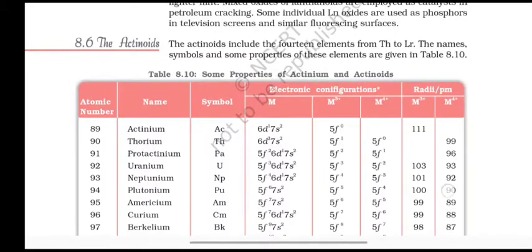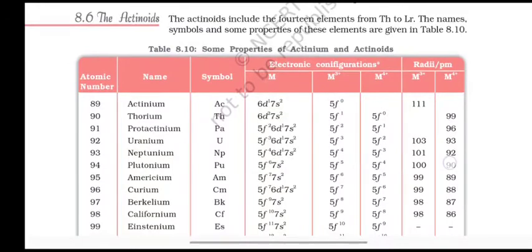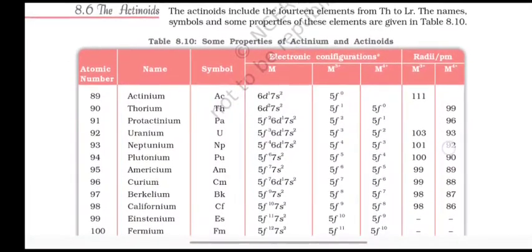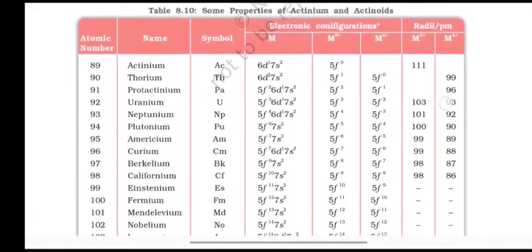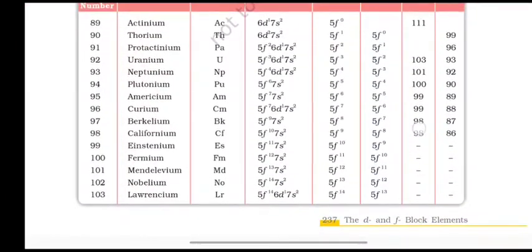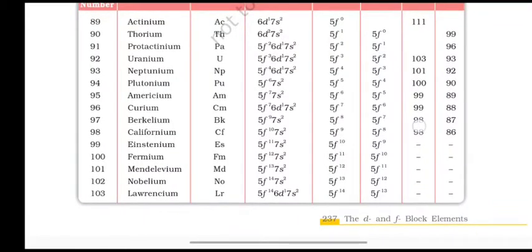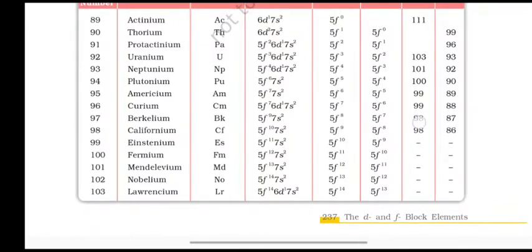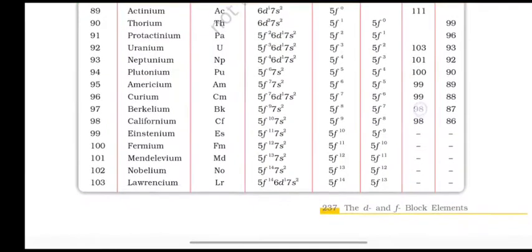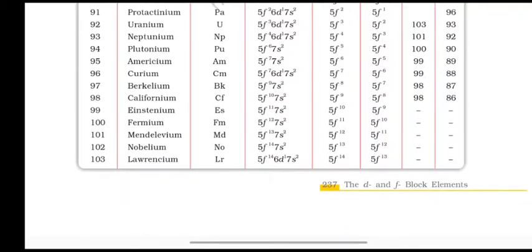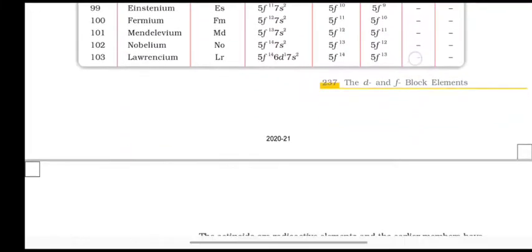The actinoids include the 14 elements from thorium to lawrencium. The names and some properties are given: actinium, thorium, protactinium, uranium, neptunium, plutonium, americium, curium, berkelium, californium, einsteinium, fermium, mendelevium, nobelium, lawrencium.